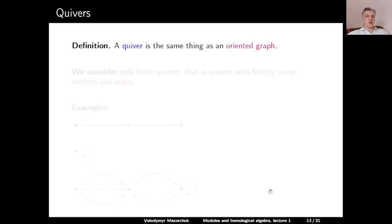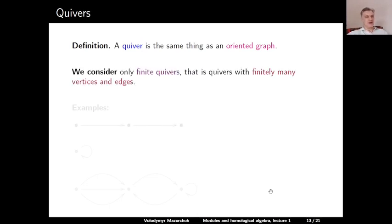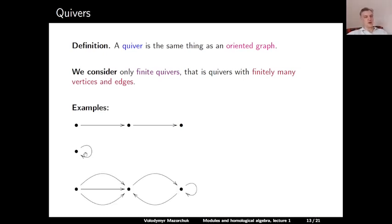Finally, let us talk about a more general set of examples of algebras: the quiver algebras. A quiver is the same thing as an oriented graph — it consists of vertices and oriented edges. We will consider only finite quivers, which means quivers with finitely many vertices and finitely many edges. We allow loops, multiple edges, and edges going in different directions, as many loops as we wish. But we only consider finite quivers.